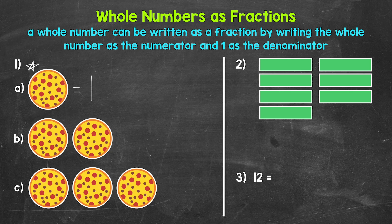This pizza is just one part — just one piece. So writing this as a fraction, one is our denominator. How many of these wholes do we have? How many pizzas do we have? One. So one is our numerator as well. We have one whole. One over one is one as a fraction.